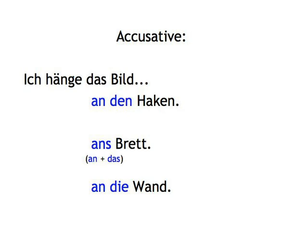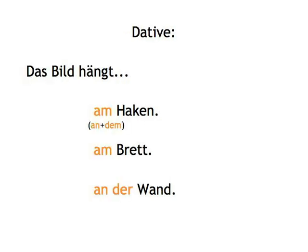In the dative, showing location — like a photo. Das Bild hängt am Haken — the picture's hanging on the hook. Am is the contracted form of an dem. Das Bild hängt am Brett — the picture's hanging on the board. Das Bild hängt an der Wand — the picture's hanging on the wall.